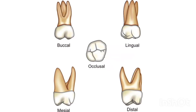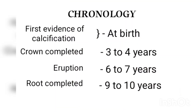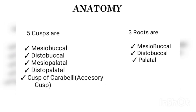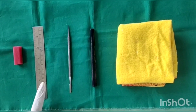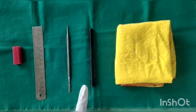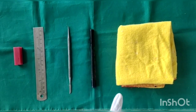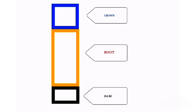In this video we are going to see about carving of maxillary first molar. The armamentarium required includes a wax block, steel ruler, lecron carver, marking pencil, and polishing tools.